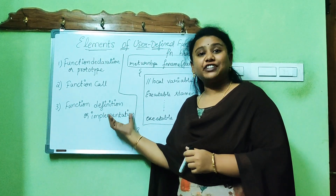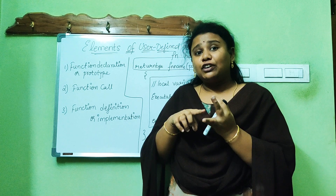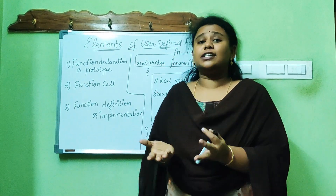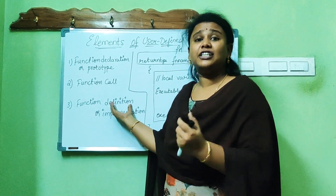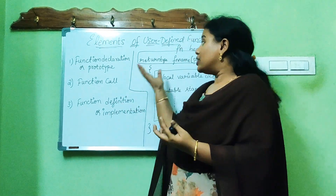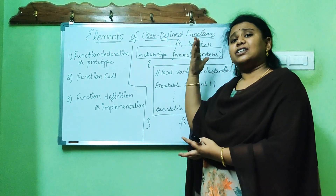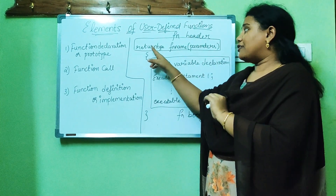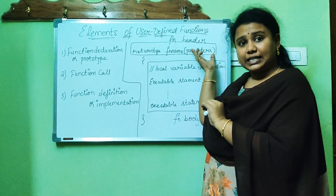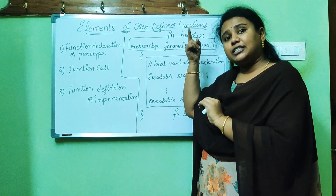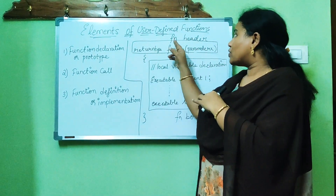Coming to the function definition or implementation — this is where the actual part comes. We have declared a function and called a function, but where does the control go and what does it execute? This resides in the function definition or implementation. The syntax it follows is the same as the declaration, but you omit the semicolon. You have to specify the return type, the function name, and the parameters list — because if parameters are being passed somewhere, someone has to receive them here. This entire statement is called the function header.